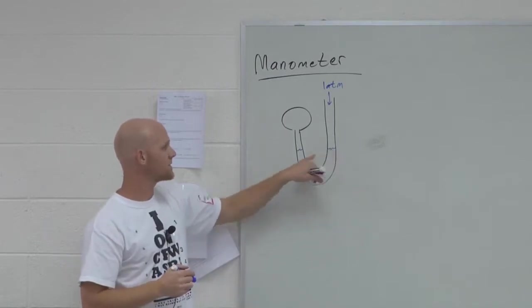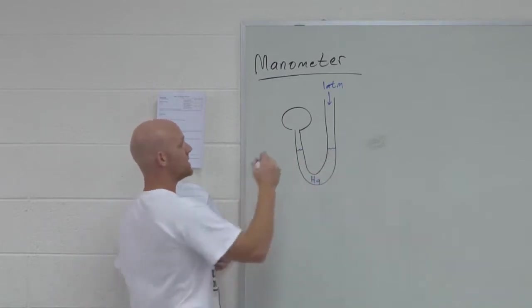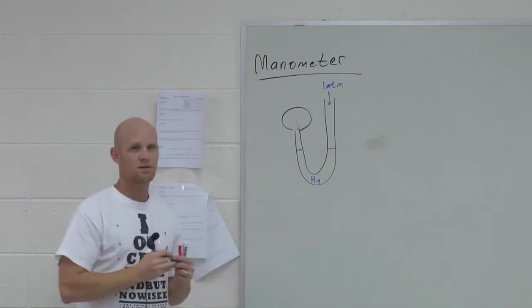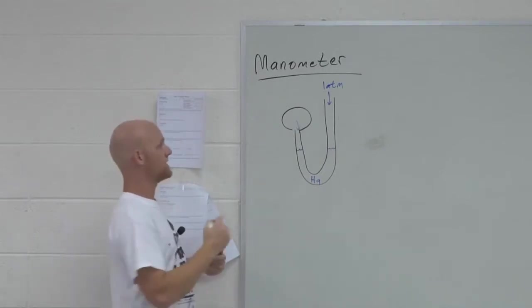If the levels of mercury in this tube are equal, what must be pushing down on this side? One atmosphere as well. They'd have to be totally equal.